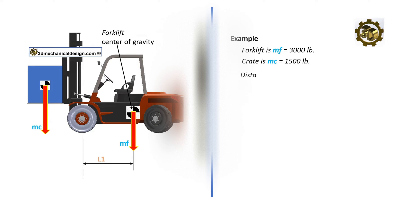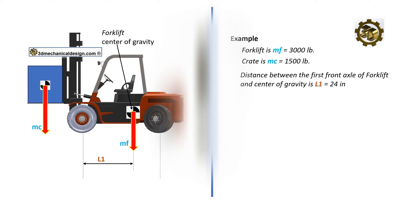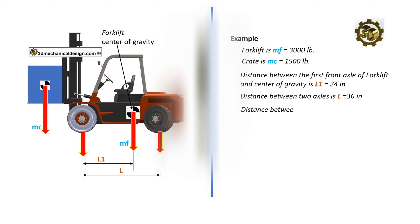Distance between the front axle and center of gravity, L1, equals 24 inches. Distance between the two axles, L, equals 36 inches. Distance between the front axle and center of gravity of the crate, L2, equals 16 inches.